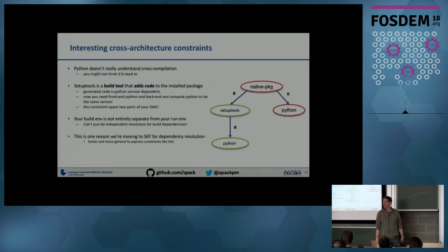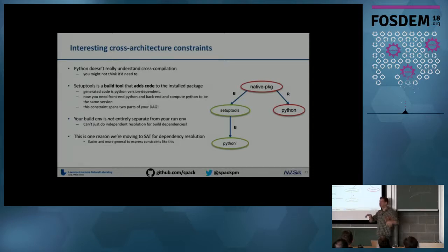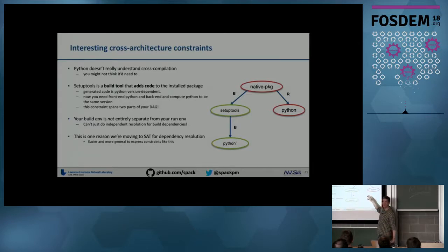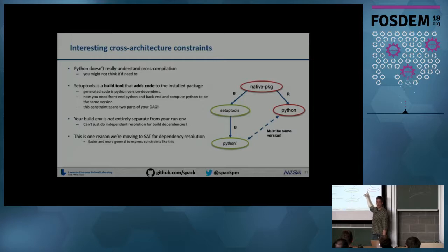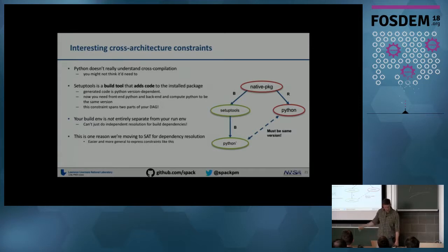There are some other interesting constraints that I wasn't even expecting. Certain tools like setuptools in Python actually add code to the installed package. You might think you could do resolution separately for the front end and back end, but you can't — setuptools running in Python on the front end injects code that needs to run in Python on the back end. Python is interpreted so architecture doesn't matter, but you do have a constraint that the two Pythons must be the same version, otherwise the injected code will fail. So we have a DAG requiring two different instances of the same package with version constraints across architectures.